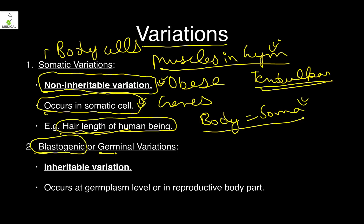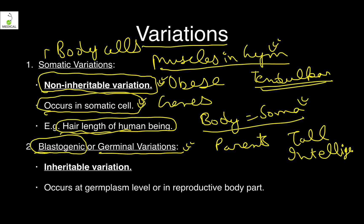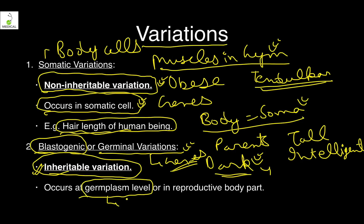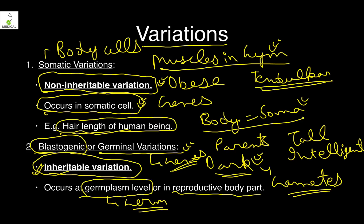On the other hand, blastogenic or germinal variations are inheritable. If your parents are tall, the odds are that you will also be tall. If their parents are dark-skinned, you cannot be white-skinned. These are the germinal variations — changes in genes that vary your DNA, your proteins, and everything you can observe. They are transmitted from parents to offspring and occur at the germplasm level, in the reproductive cells.